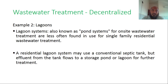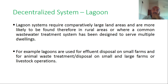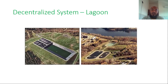We can also use a lagoon, also known as a pond system, for on-site wastewater treatment. Lagoons are less often used for single-family residential wastewater treatment. A residential lagoon system may use a conventional septic tank, but the effluent flows to a storage pond or lagoon for further treatment. Lagoon systems require comparatively large land areas and are more likely to be found in rural areas or for systems designed to serve multiple properties, such as small farms or livestock waste treatment.